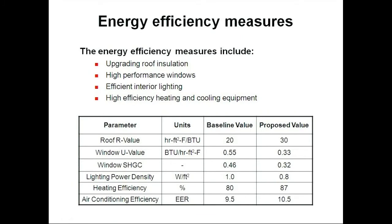The energy efficiency measures, which will establish our proposed building values, are upgrading roof insulation, establishing high-performance windows, efficient interior lighting, and high-efficiency heating and cooling equipment. In order to model those upgrades, we're going to change the roof R-value from 20 to 30. The window U-value will decrease from 0.55 to 0.33, and the window solar heat gain coefficient will likewise decrease to 0.32. The lighting power density will decrease by 20% to 0.8 watts per square foot, and we're using condensing boilers now — so instead of 80% efficiency we've jumped to 87%. Purchasing high-efficiency cooling equipment results in an EER of 10.5, up from 9.5. Here we see the new input values, which were acquired by adjusting the roof R-value, window U-value, etc., to the new values.